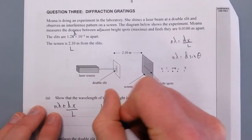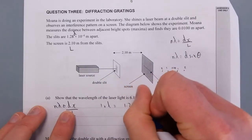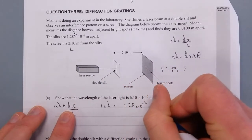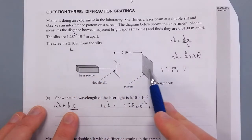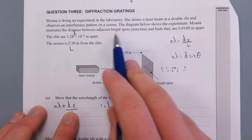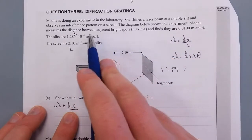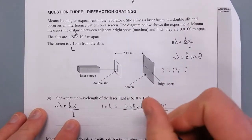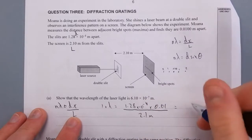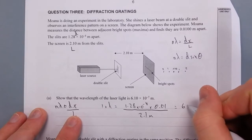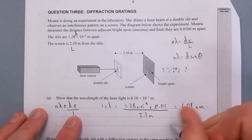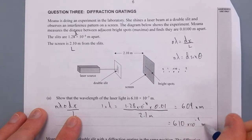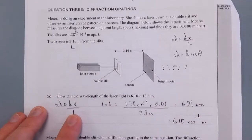So 1 times λ = 1.28 × 10^-4 times the distance between the bright, or the central maxima and the first bright spot. Let's just figure that out, actually. Distance between adjacent bright spots, so it's 0.01 divided by the length, 2.1 meters. And that actually does give us 609 nanometers, or equal to 610 × 10^-9 meters. That should be 9. I like using engineering form just because it makes sense for lasers.